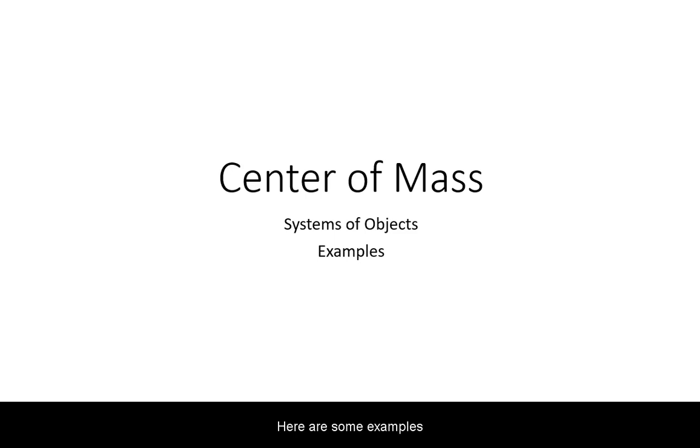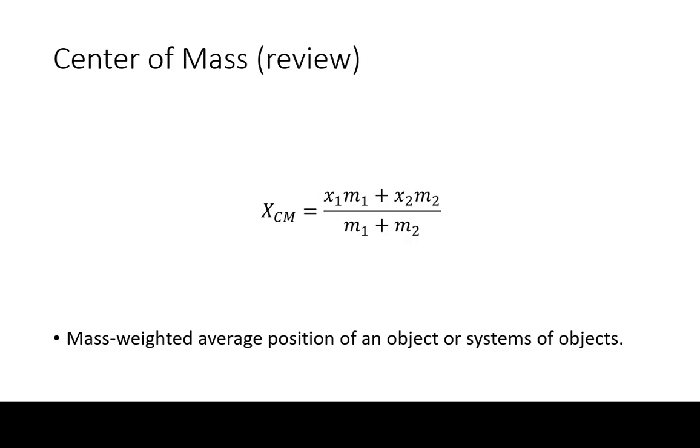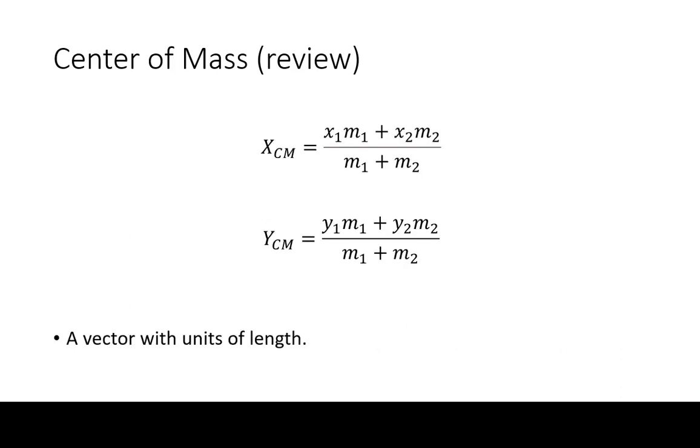Here are some examples of the calculation of the center of mass for systems of objects. As a reminder, the center of mass for a system of objects is calculated as their mass-weighted average position. Center of mass is a vector and has units of length.